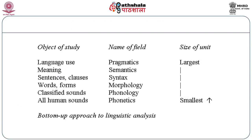In this diagram, you can see that we have the object of study, the name of field, and the size of unit — the smallest as well as the largest. This is called the bottom-up approach to linguistic analysis. The smallest unit is phonetics, related to all human sounds, and the largest is pragmatics, related to language use. In between, we have phonology (classical sounds), morphology (words and forms), syntax (sentences and clauses), and semantics (meaning).